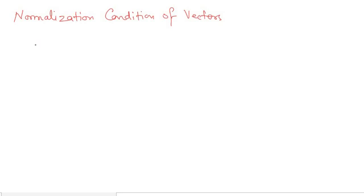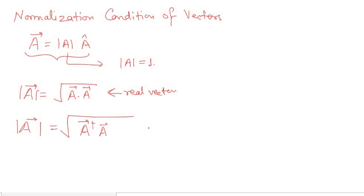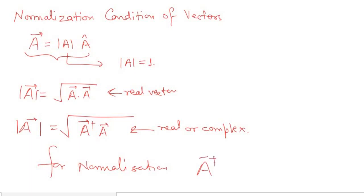The normalization condition states that if a vector A has magnitude |A| equal to 1, it is normalized. For real vectors, A·A gives the squared magnitude. For complex vectors, the modulus is given by the square root of A†A. For normalization, A†A must equal 1 — that is the basic definition: the modulus of any normalized vector equals 1.